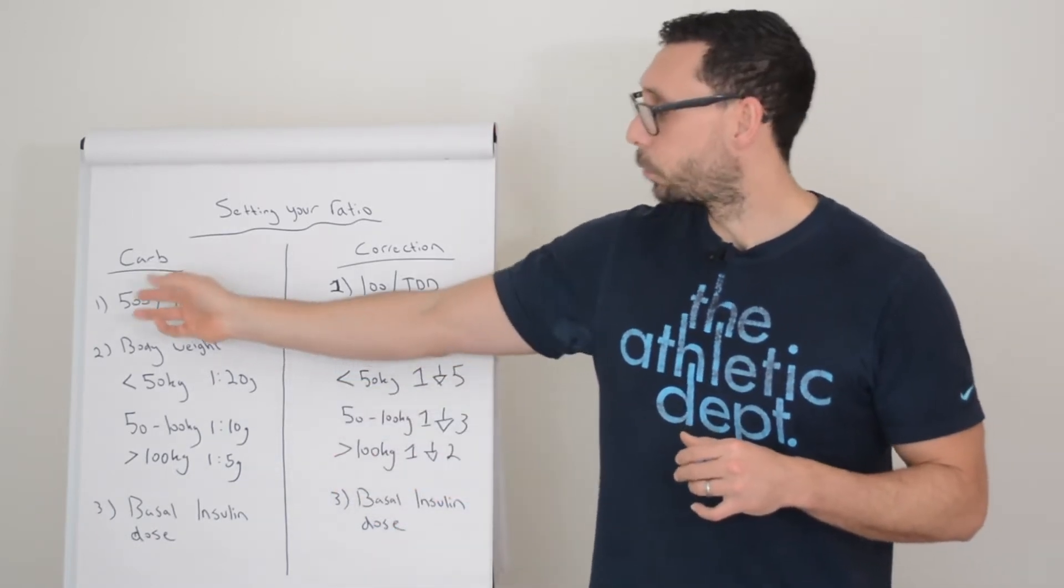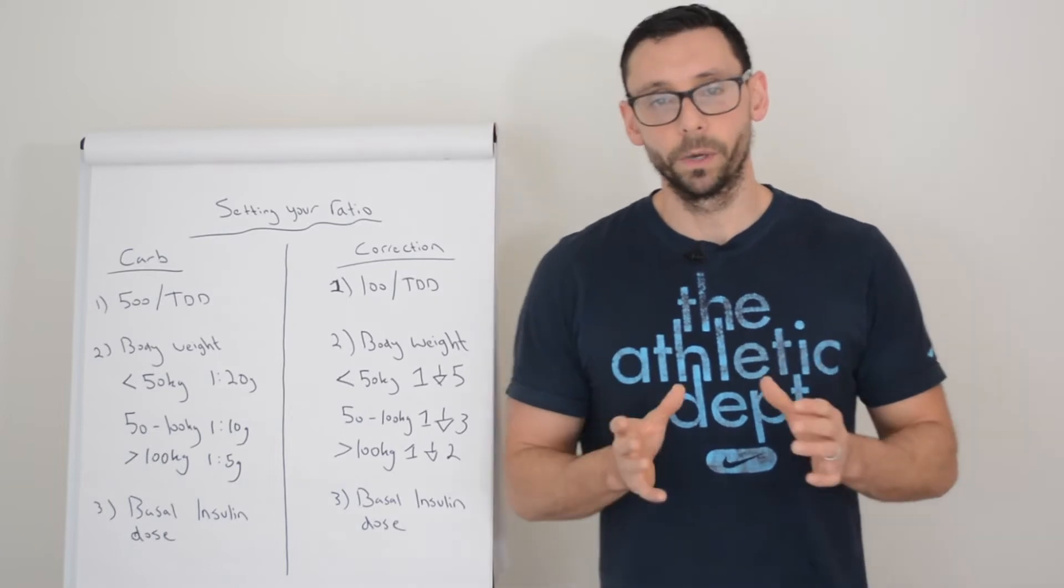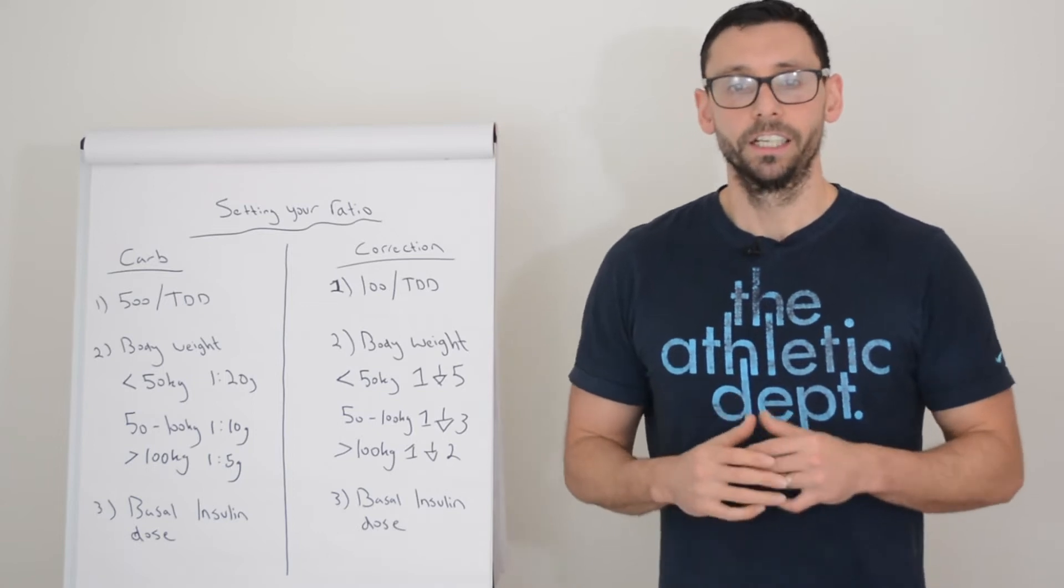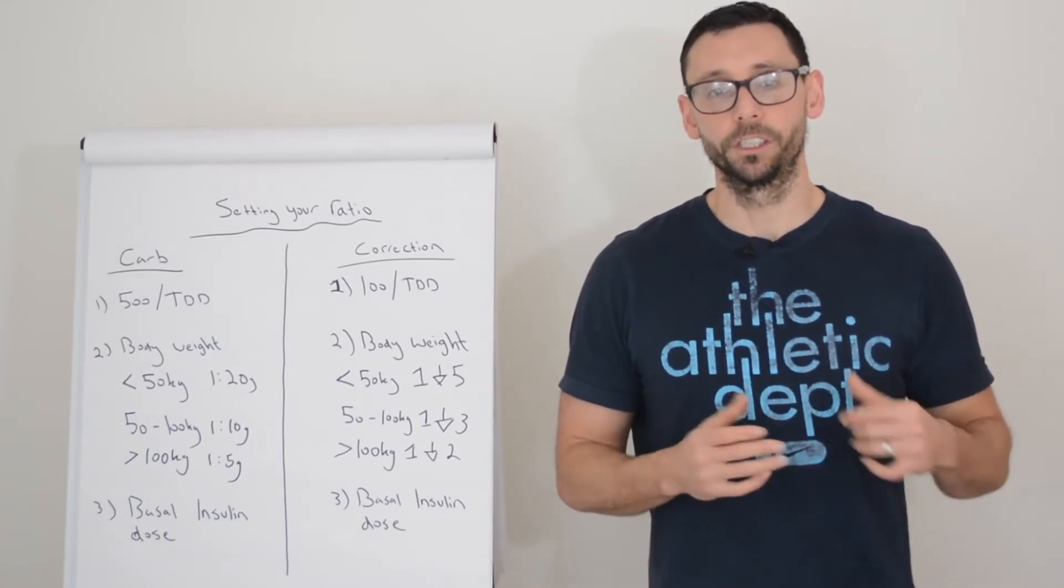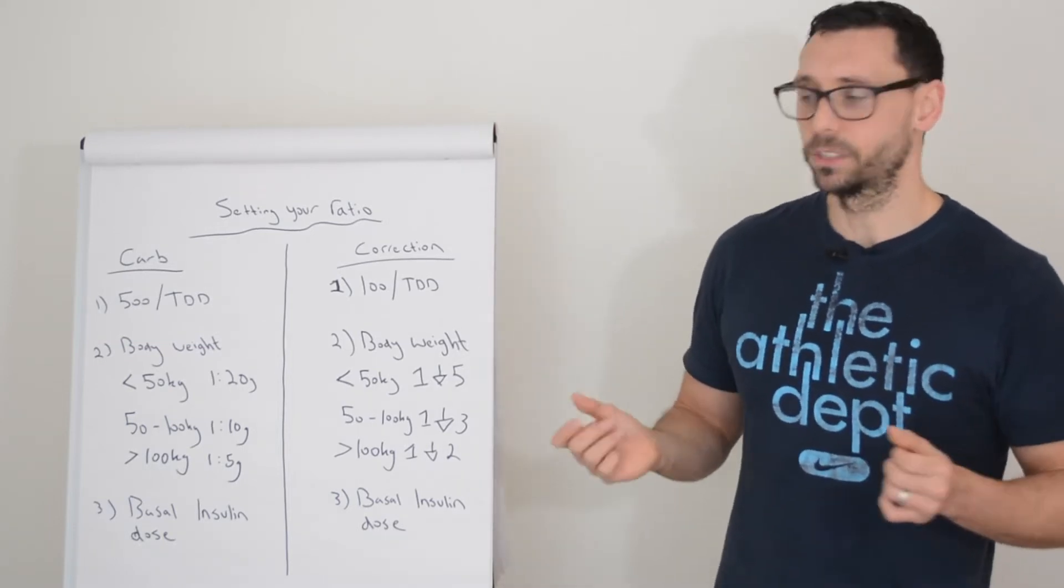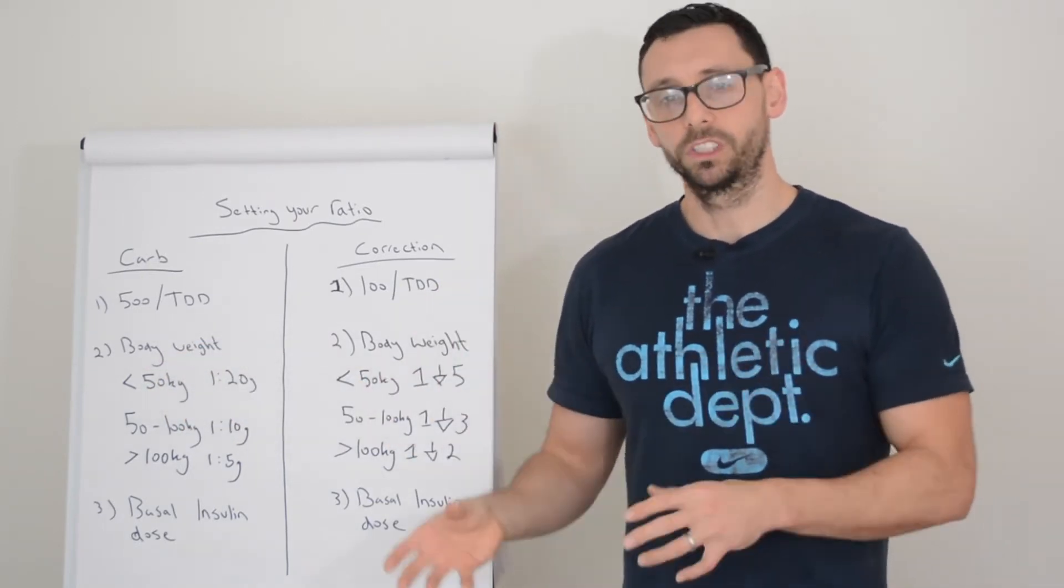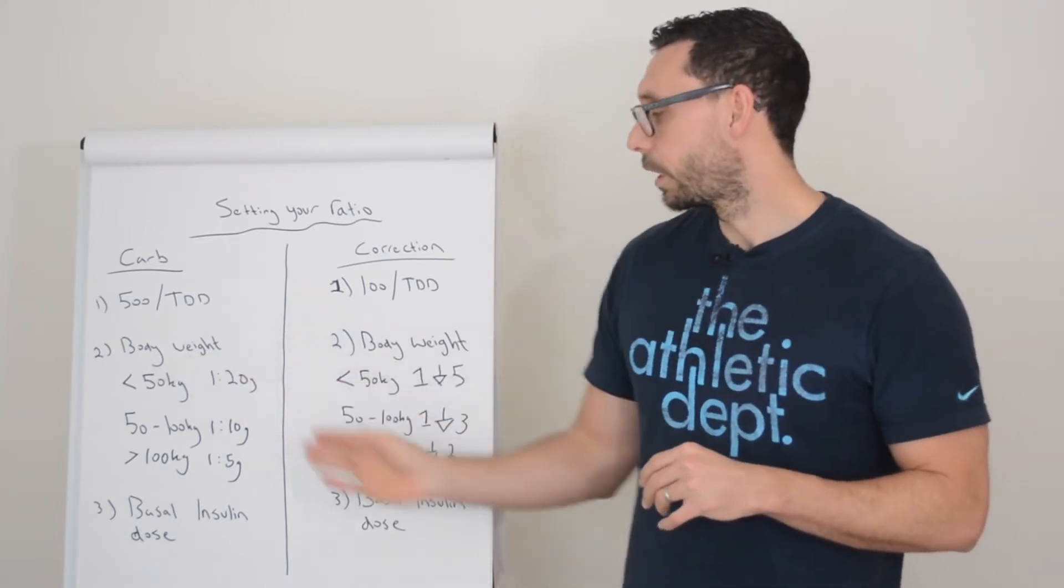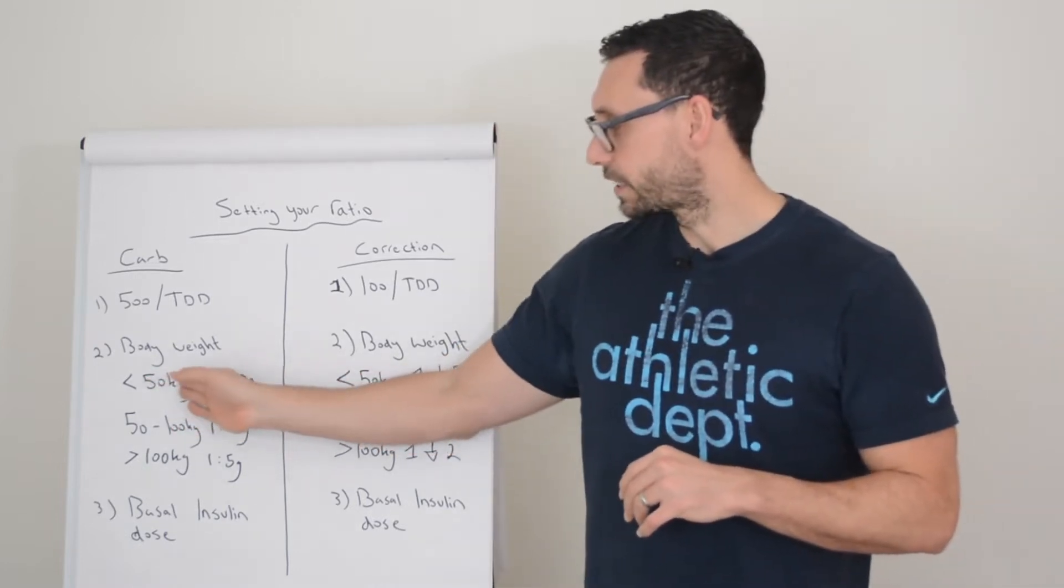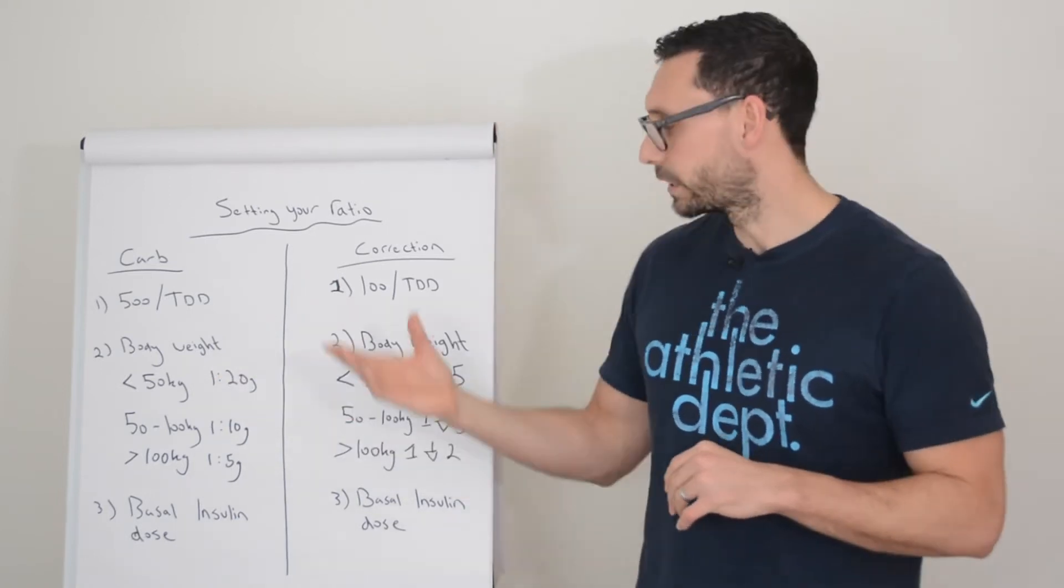Number two is using your body weight. Now we work in kilograms for this. There are 2.2 pounds to every kilogram, so you can reverse engineer it or just use an online calculator. We can use simple rules of thumb here. If you are under 50 kilograms, so you're quite a light individual, you will probably be more sensitive to your insulin. So therefore we tend to apply a one unit to 20 grams of carbohydrate ratio. Obviously the closer you get to 50, the less likely you are to be 1 to 20. You might actually be more like 1 to 15 or 1 to 18, but 1 to 20 is a good starting point.